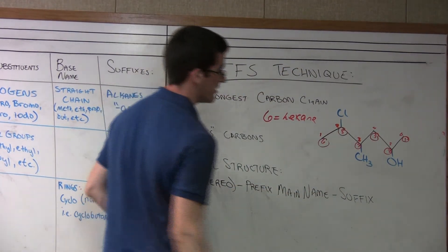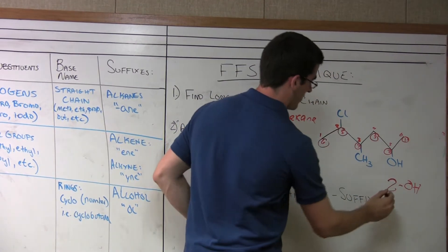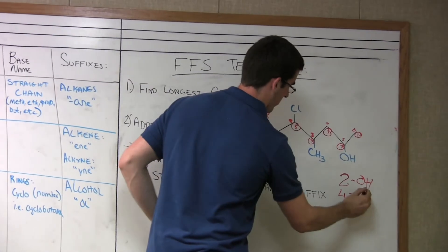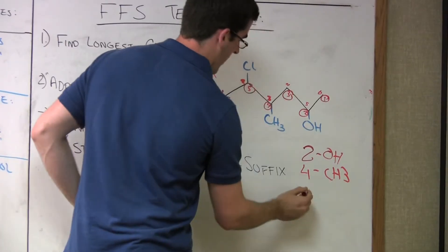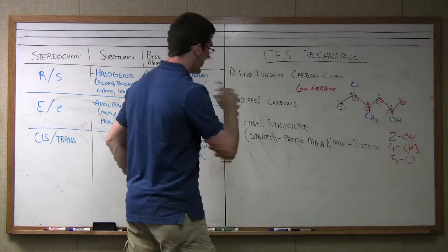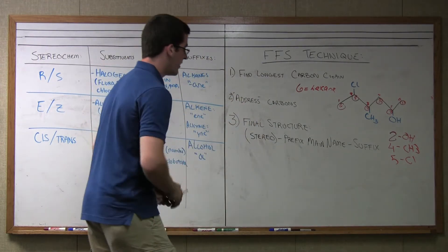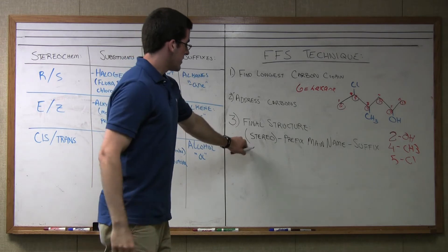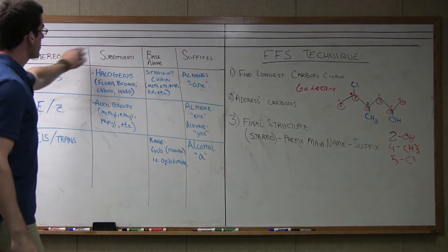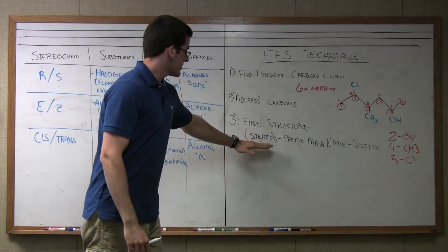Now I can write these down for my reference. At the two position, I'm going to have my alcohol. At the four, I'm going to have my methyl group. And at the five position, I'm going to have my chlorine. Now that I've addressed my carbons, I'm going to put them into the final structure here. The final structure is detailed like this. There's four sections, just how I have it laid out here. Stereochem, substituents, base name, and the suffixes.